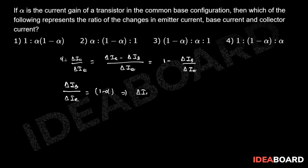Delta I B can be written as 1 minus alpha multiplied by Delta I E. So we can write Delta I E